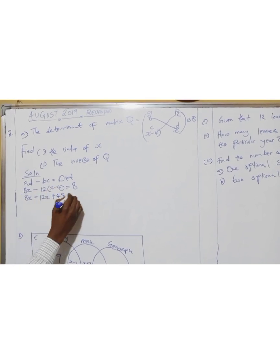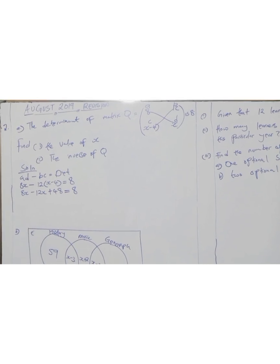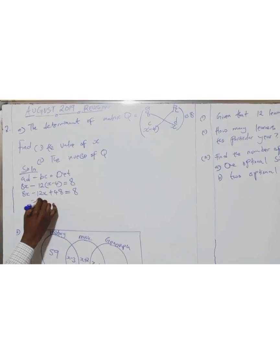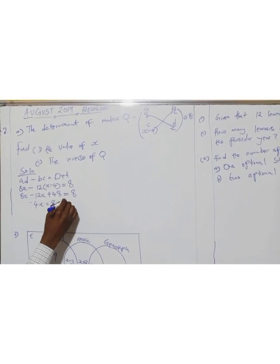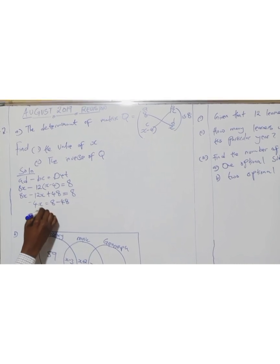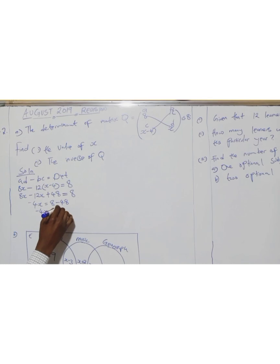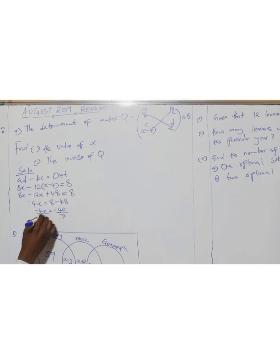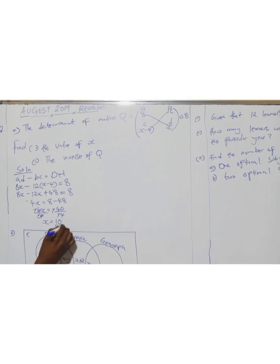This equals 8. So 8x minus 12x gives you negative 4x, which equals 8. This 48 must go to the other side — it becomes negative 48. So 8 minus 48 is negative 40, over negative 4. This cancels. X equals 10. Done.